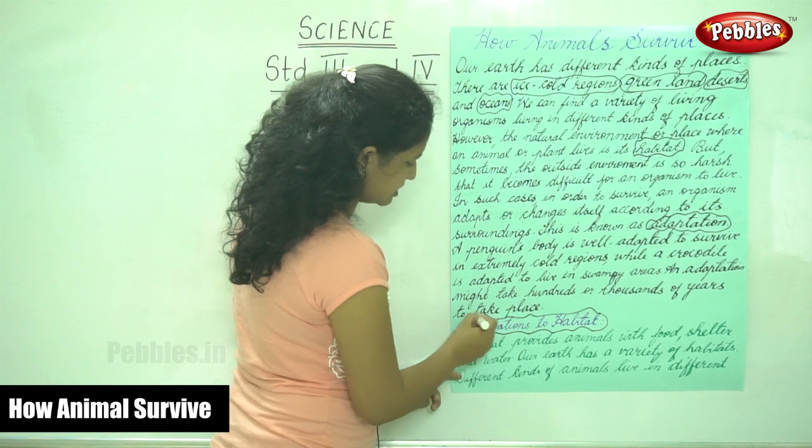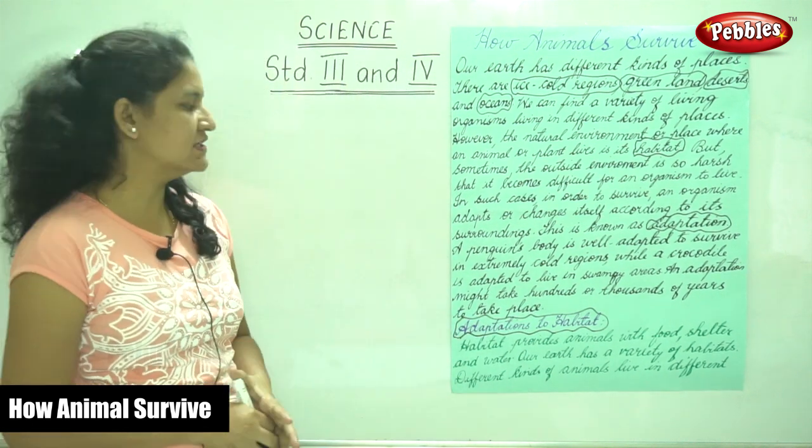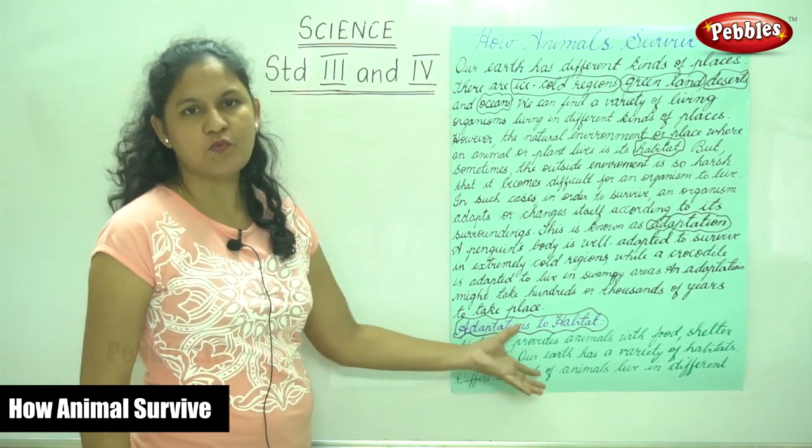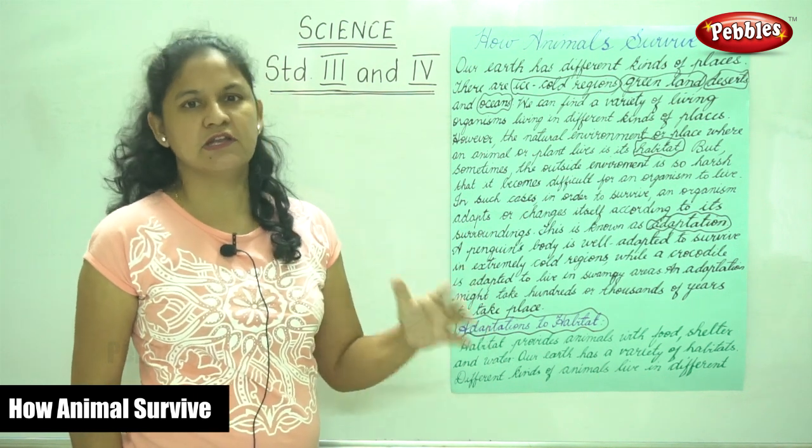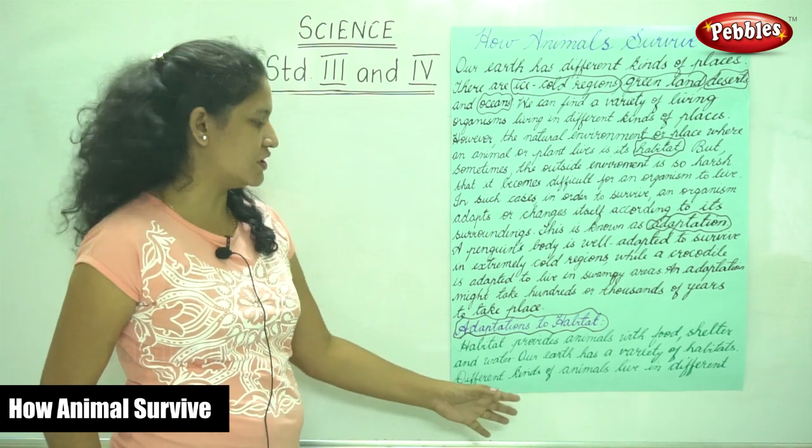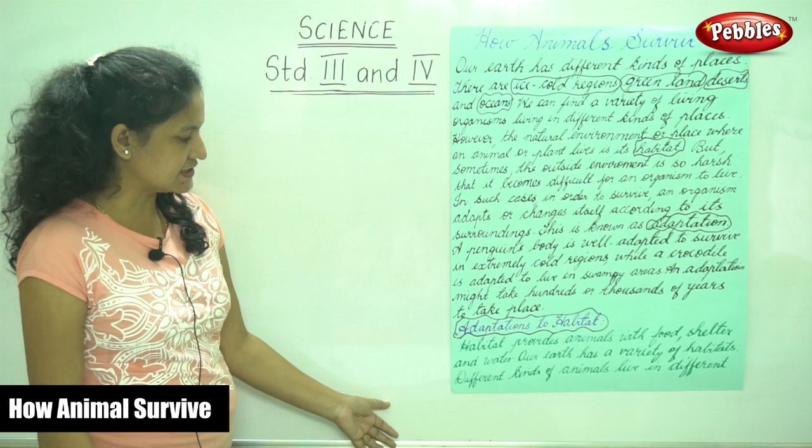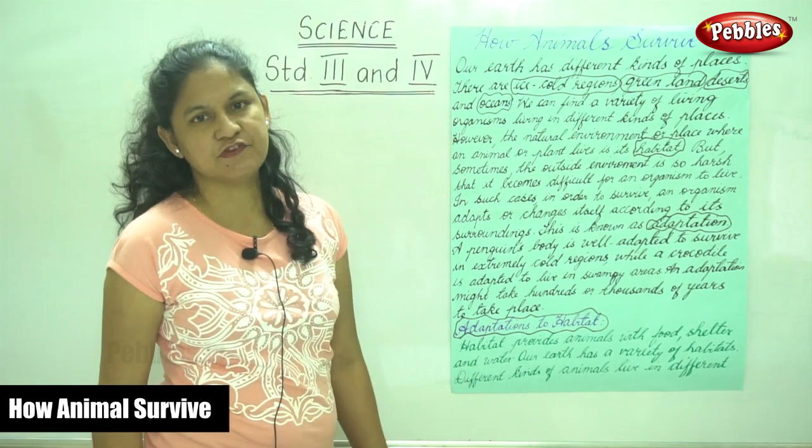Next is adaptations to habitat. Habitat provides animals with food, shelter and water. Our earth has a variety of habitats and different kinds of animals live in different habitats.